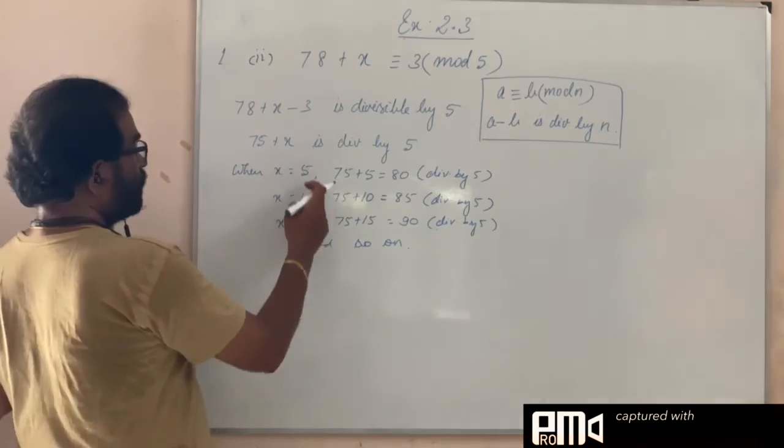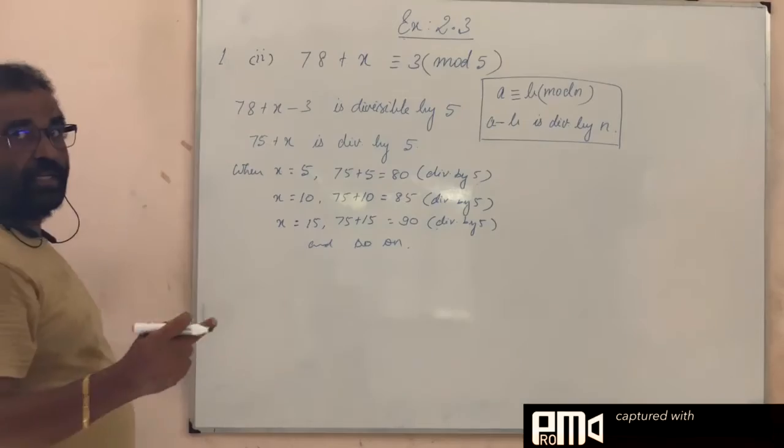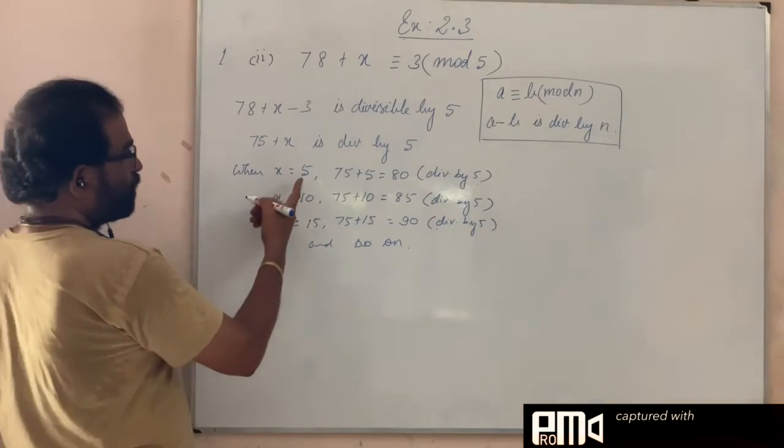We have some values: 5, 10, 15 to pick for x. Among all the values, we have to select the least positive. So what is the least positive value? 5.